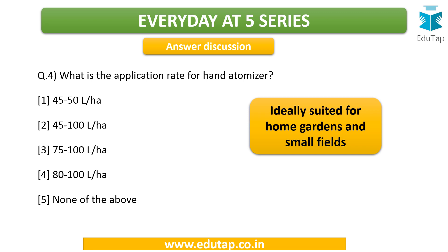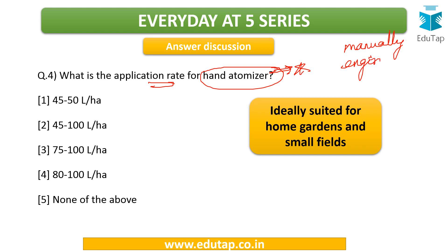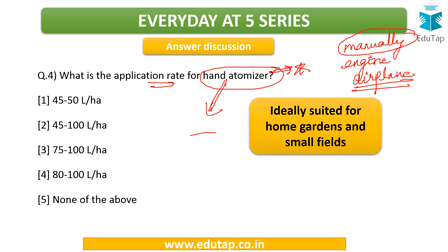The last answer to discuss: what is the application rate for a hand atomizer? Sprayers can be manually operated, engine operated, or even airplane operated — using airplanes we spray insecticides, fertilizers, or fungicides in crop fields. Under manually operated sprayers, one example is the hand atomizer, which is ideally suited for home gardens and small fields. Its application rate is 45 to 100 liters per hectare.